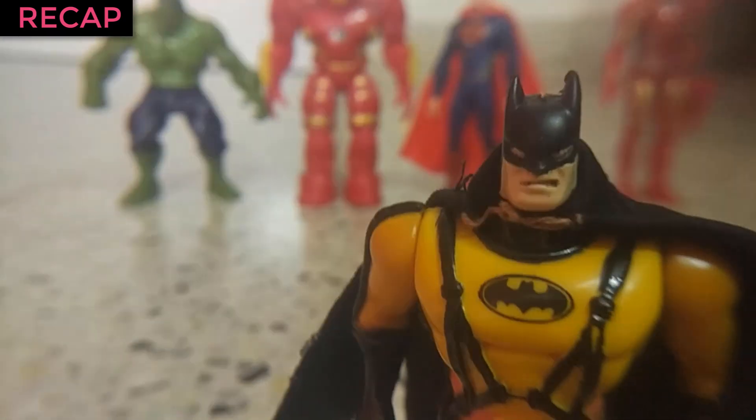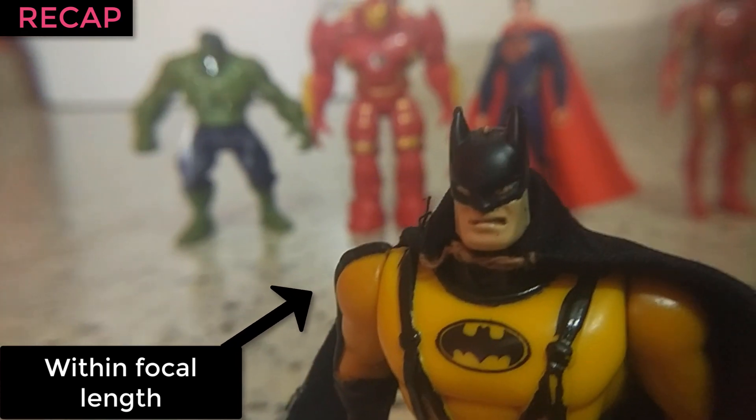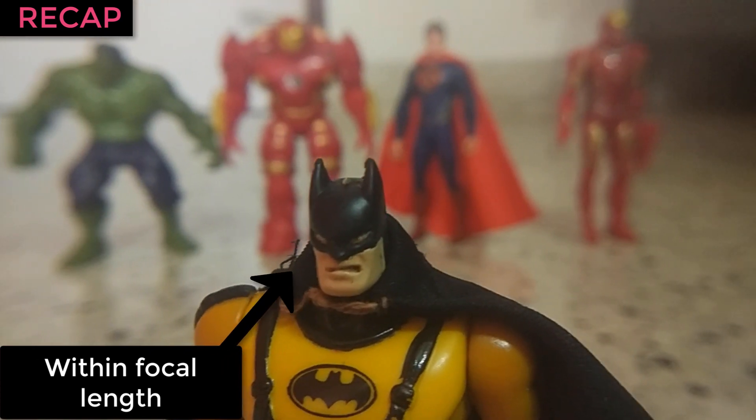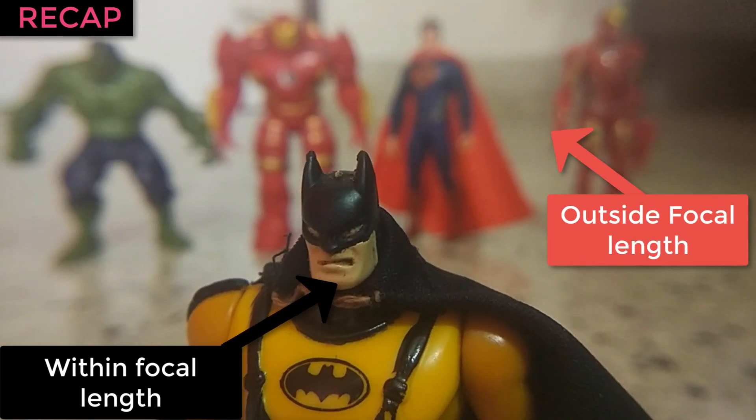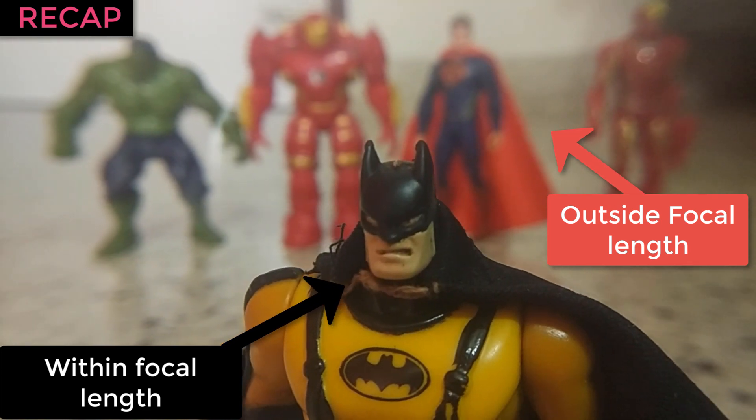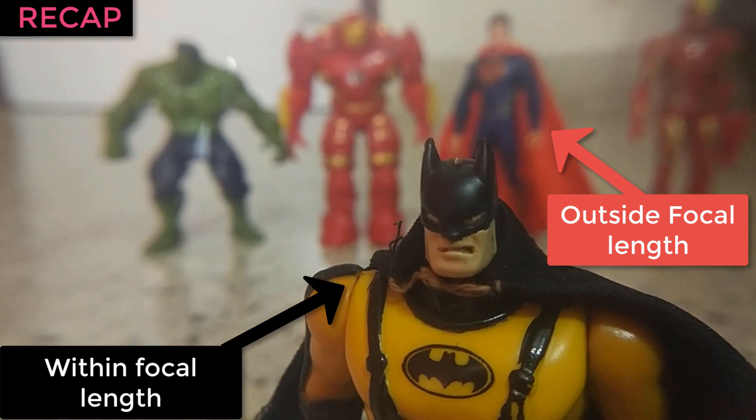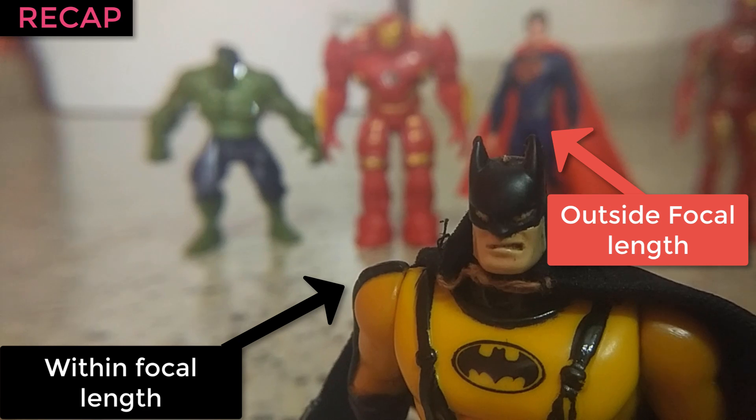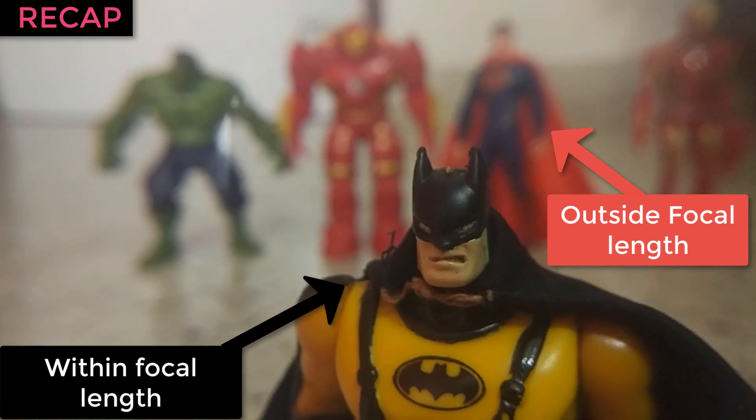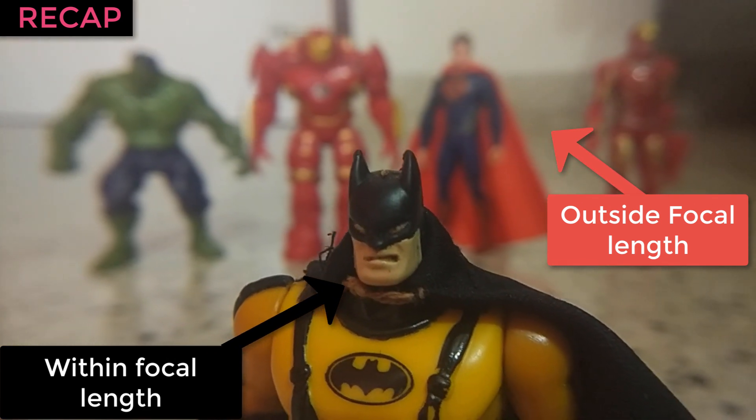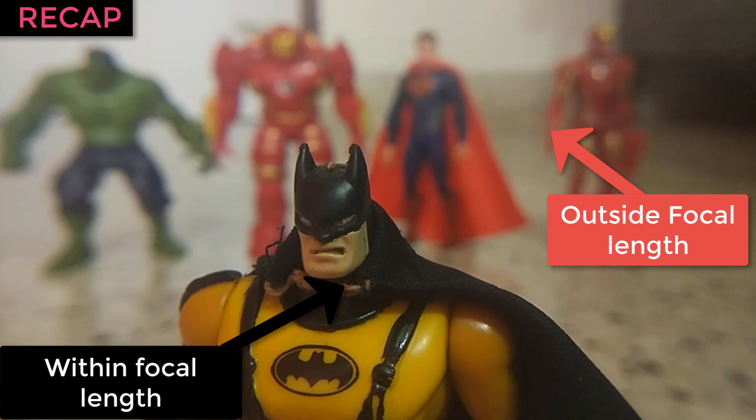We've seen in a previous video how a magnifying glass works in great detail. But in short, in order for the magnifying glass to work, the objects have to be within its focal length. If there's any object which is outside the focal length of your convex lens, it's just gonna look blurred. If you need more clarity or more details about that, it'll be a great idea to go back, watch those videos, and then come back over here.